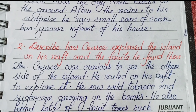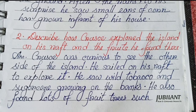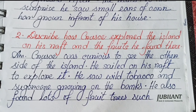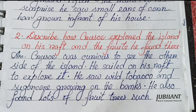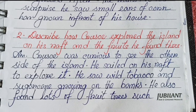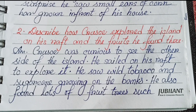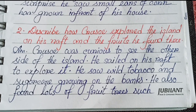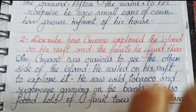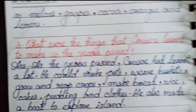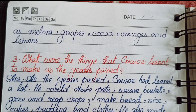Question 2: Describe how Crusoe explored the island on his raft and the fruits he found there. Crusoe was curious to see the other side of the island. He sailed on his raft to explore it. He saw wild tobacco and sugar cane growing on the banks. He also found lots of fruit trees such as melons, grapes, cocoa, oranges, and lemons.